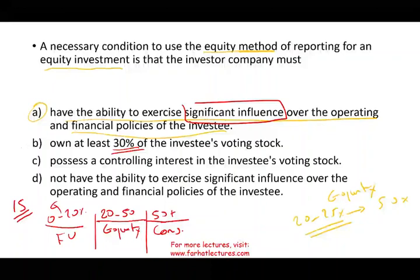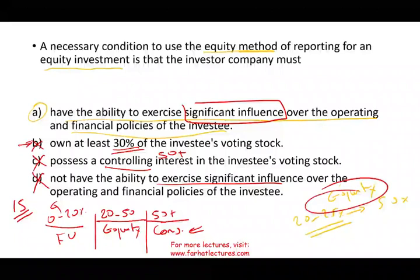Answer C — 'possess control over the investee's voting stock' — describes consolidation, which requires 50%+. Answer D — 'do not have significant influence' — is the exact opposite of what's needed. To use the equity method, you need enough shares to vote yourself or someone you trust onto the board of directors, giving you some influence over the company's management. Under those circumstances, you use the equity method.